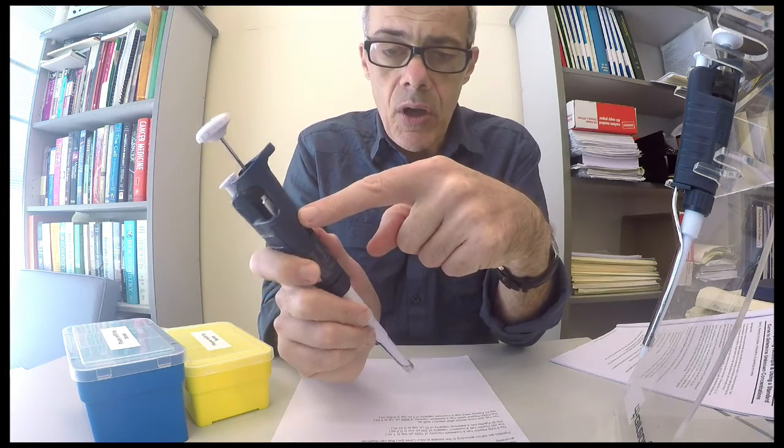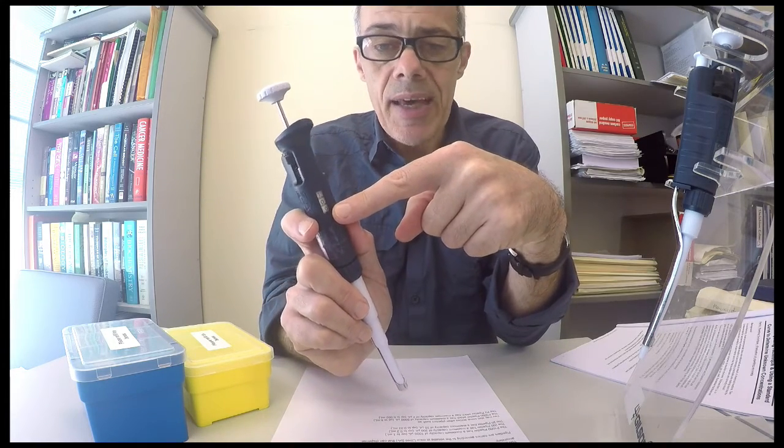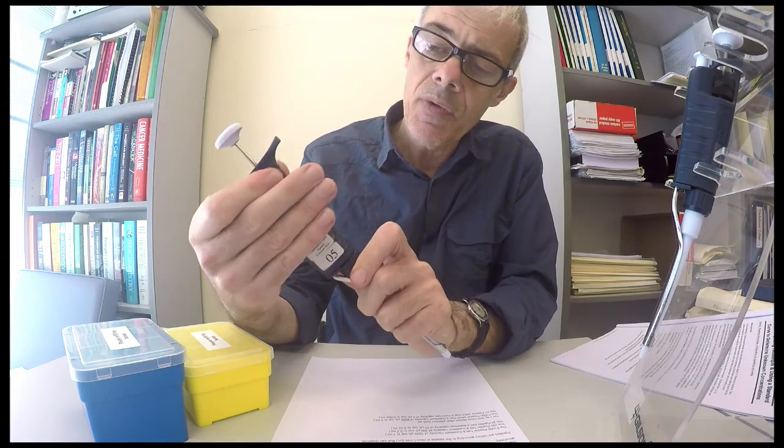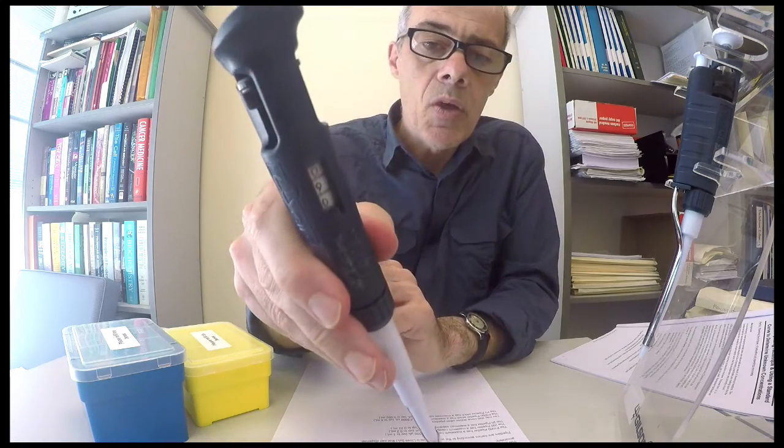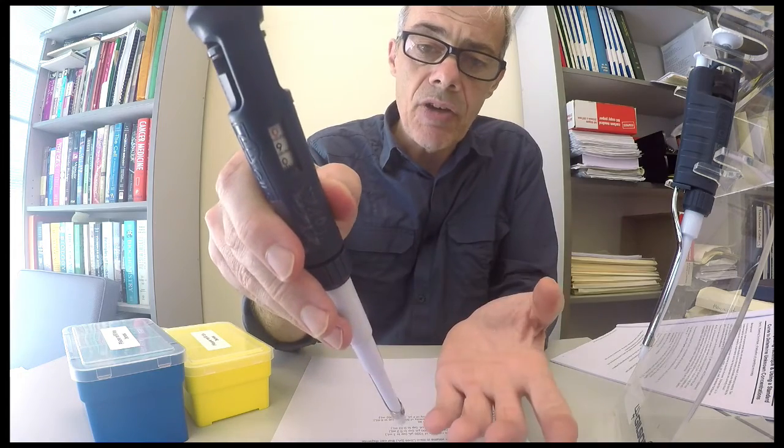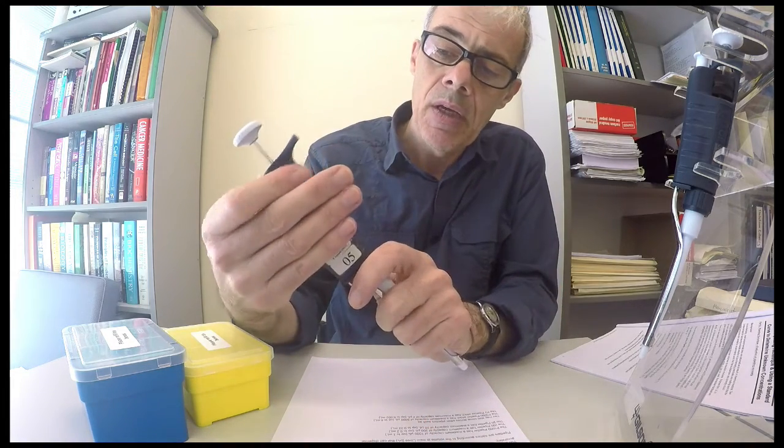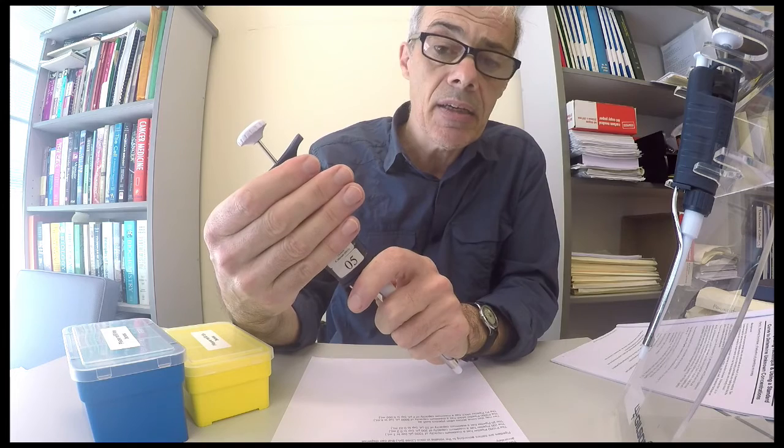So 100 on this scale refers to a thousand microlitres, and therefore 90 on this scale would refer to 900 microlitres. And we want to dispense 800 microlitres.